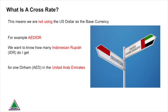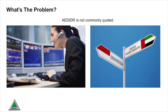When we use the term cross rate, we're simply talking about foreign exchange quotes where the dollar is not the base currency. So instead of looking at how many Indonesian rupiah we might get for $1, a cross rate would be where we're looking at how many rupiah we get for a dirham, for example, in the United Arab Emirates. The problem we have is that the dirham-rupiah rate is not regularly quoted on a screen since it's not a very common pair of currencies, so we're going to have to work it out for ourselves.